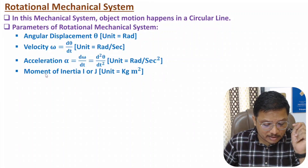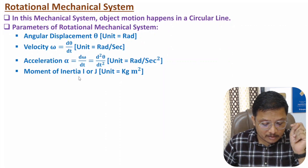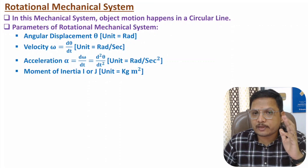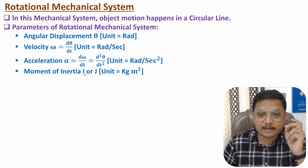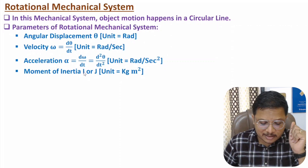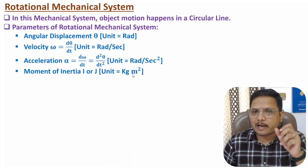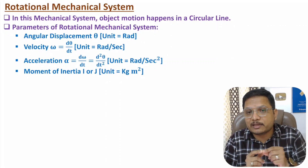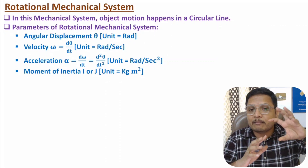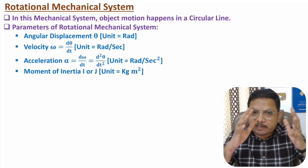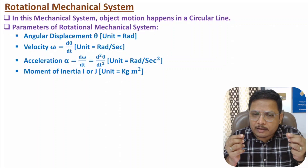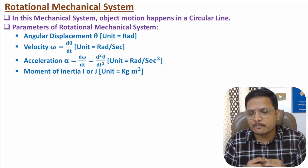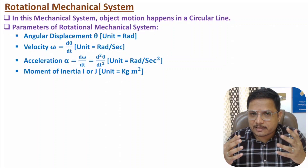In linear motion we talk about mass, but in rotational motion we talk about moment of inertia. In some books moment of inertia is denoted by I and in some books by J. The unit of moment of inertia is kilogram meter square. The value of moment of inertia depends on the body — it differs for a ring, a disc, a solid sphere, a hollow sphere, or a rod.